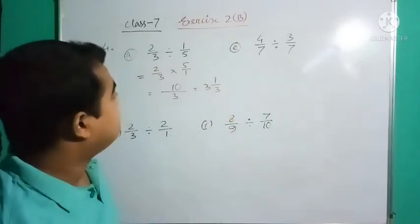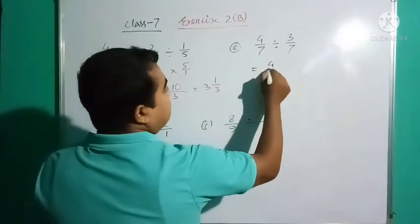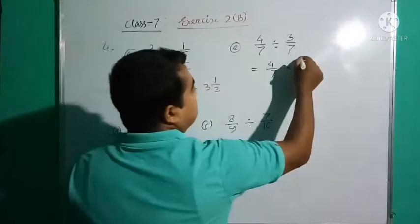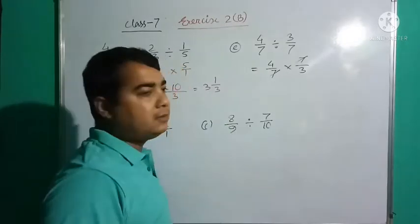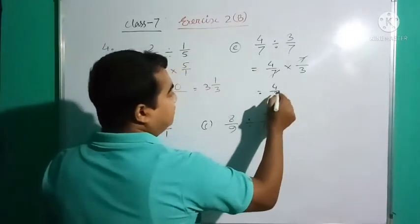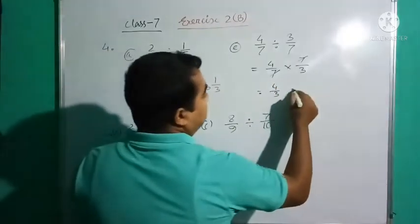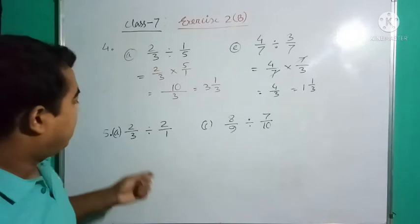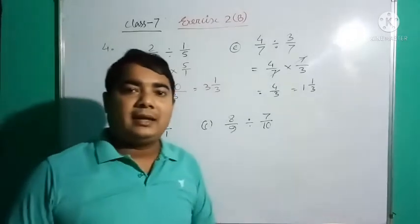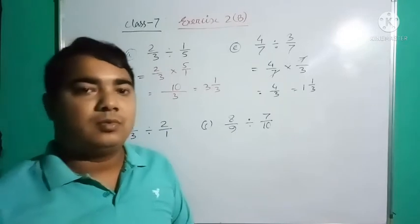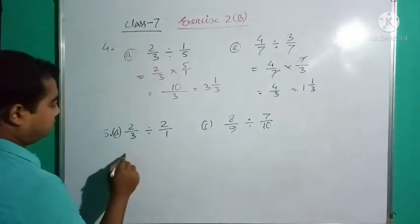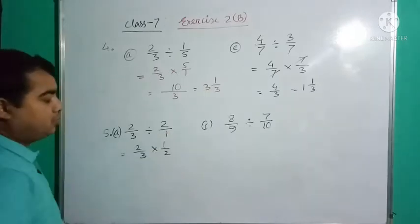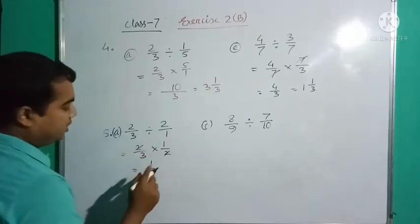Question number five: divide the first polynomial by the second polynomial, and check if the answer is greater than or less than one. 2/3 divided by, the opposite is multiplication. Same process: 2/1 times 1/2. Now 2 cancel, that's 1/3. The answer is 1/3.